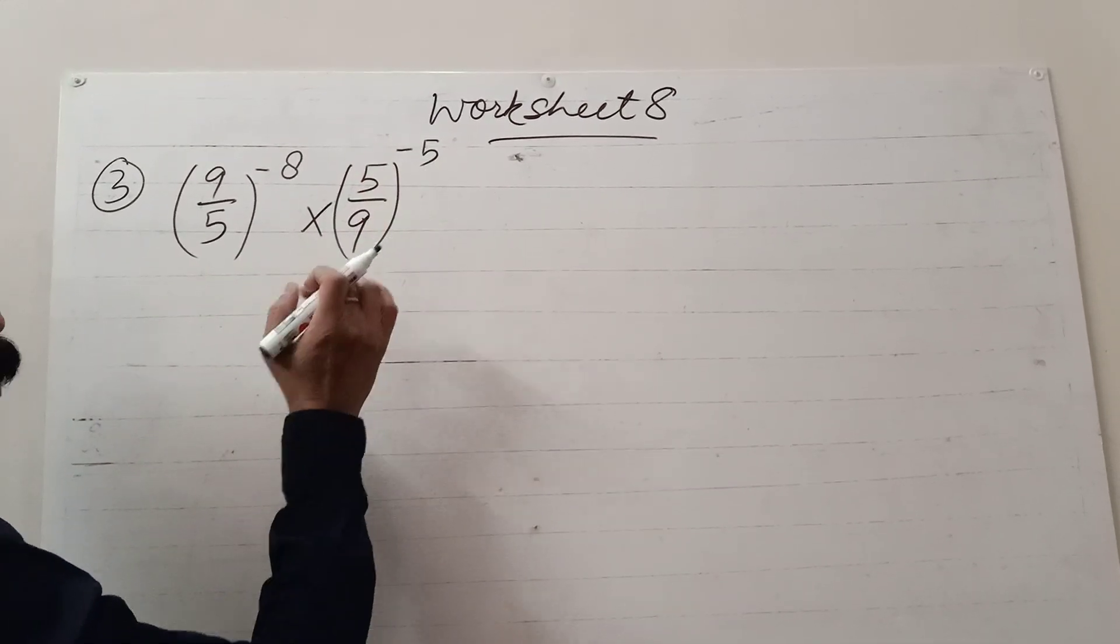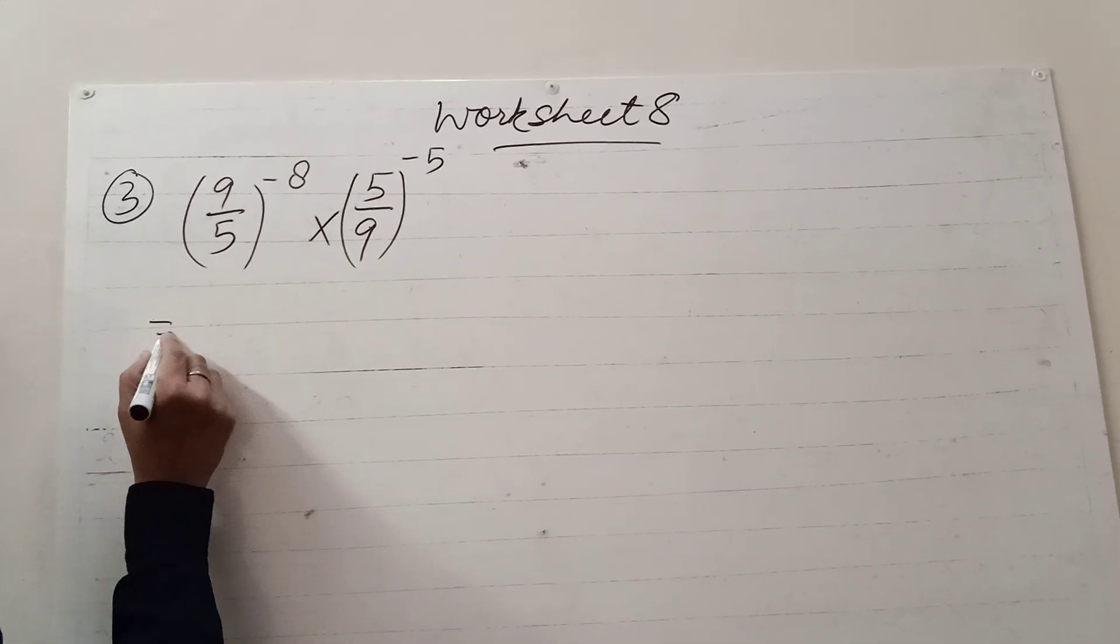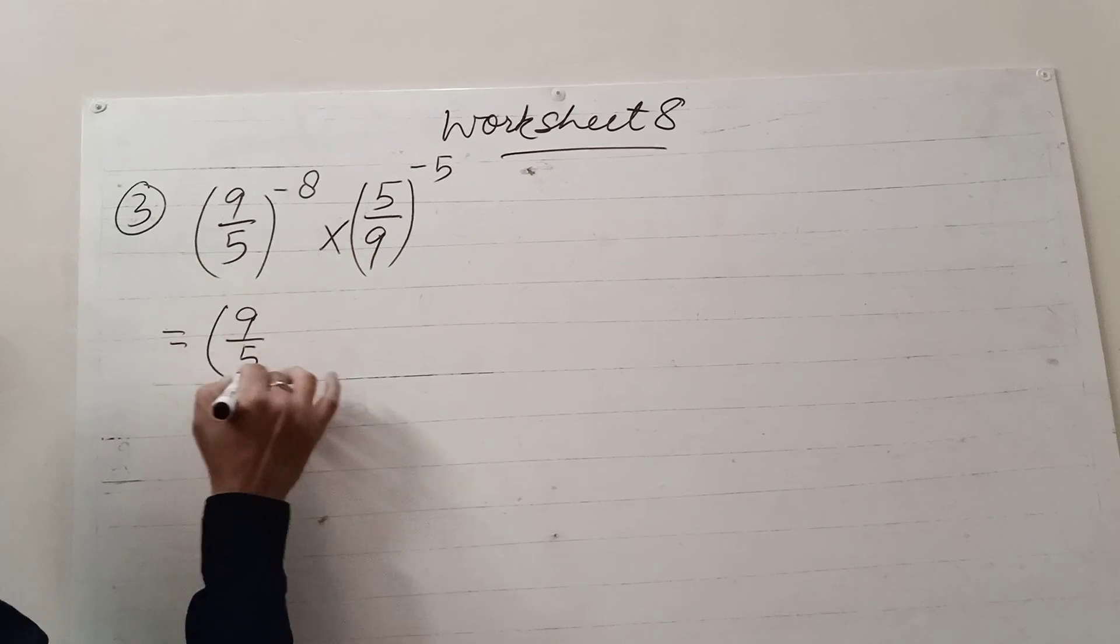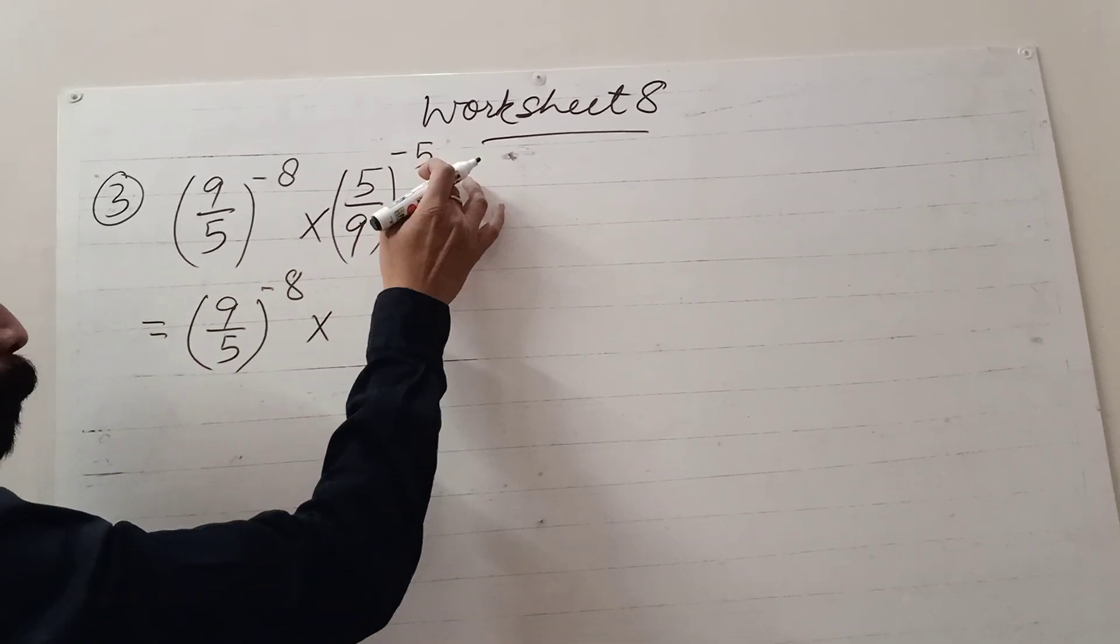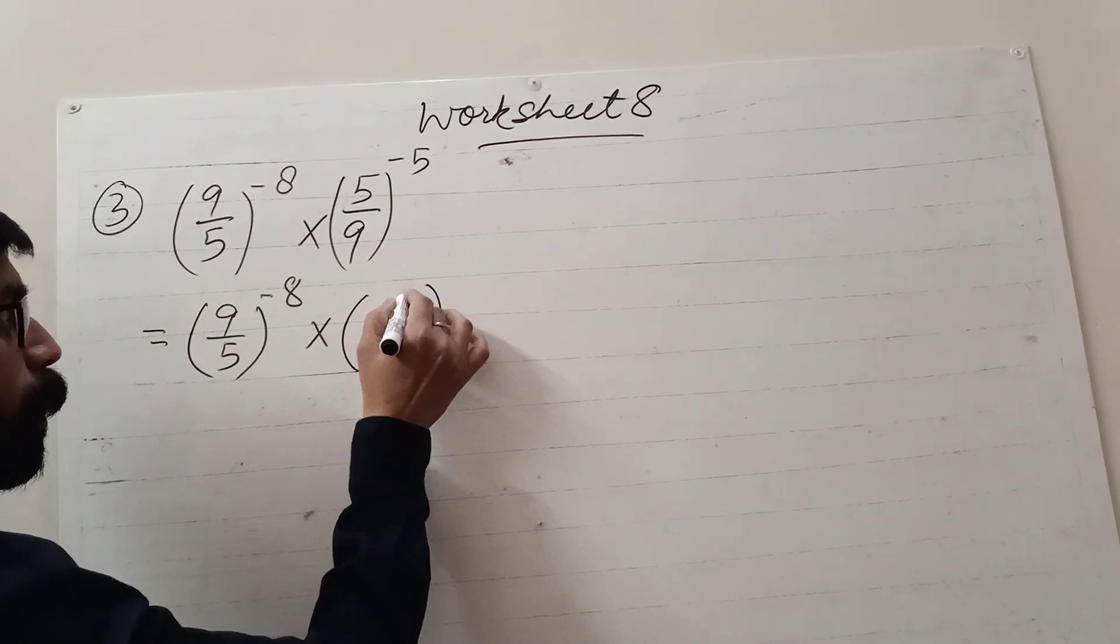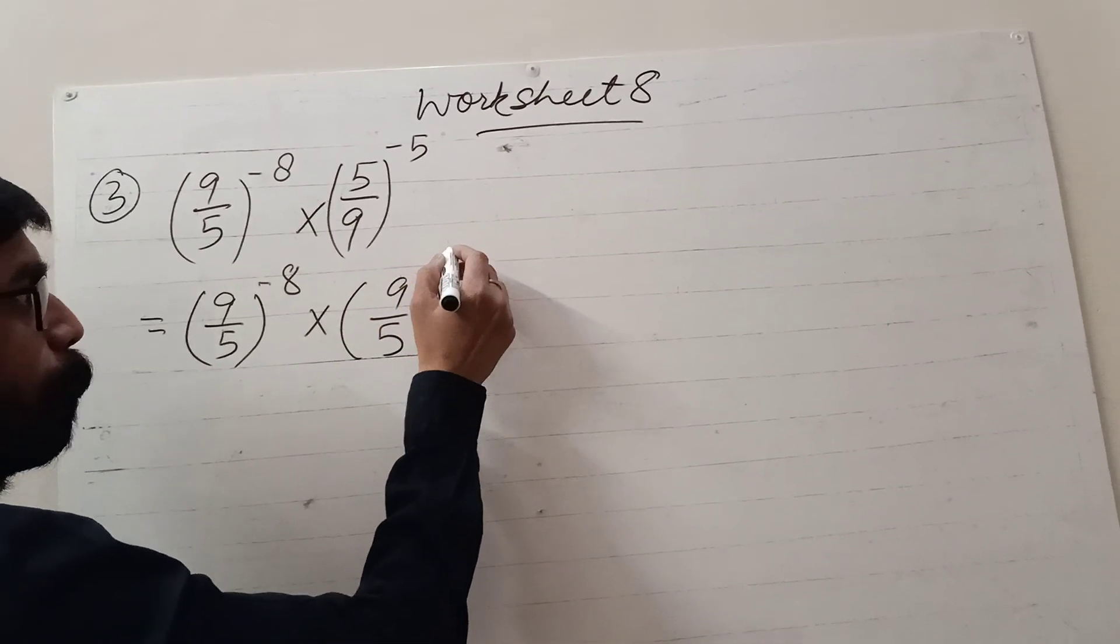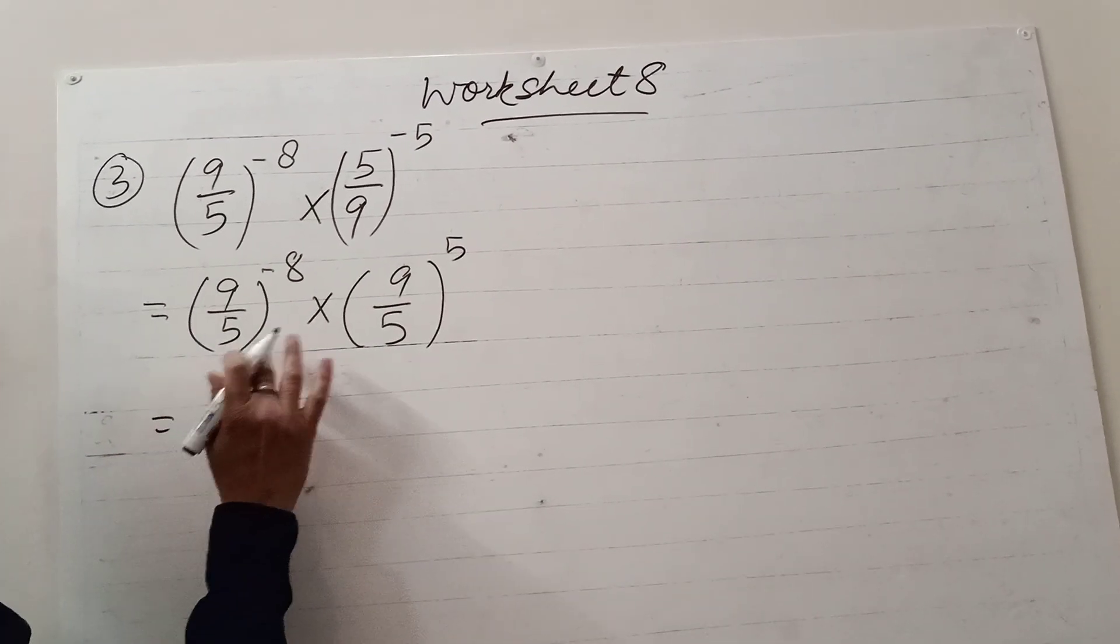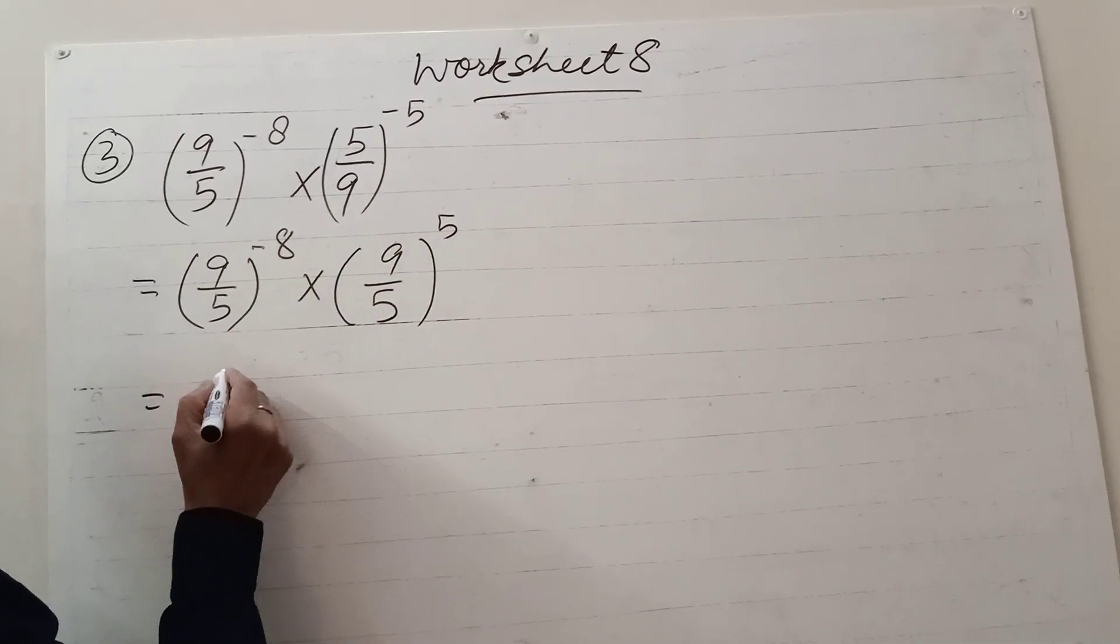If we make reciprocal of it, base will be same. So, (9/5)^-8 into, make it positive, it will be reciprocal to the power 5. Now, bases are same in the case of multiplication, powers are added.